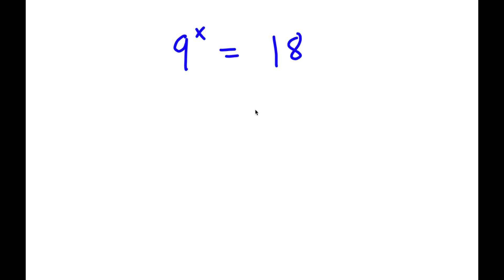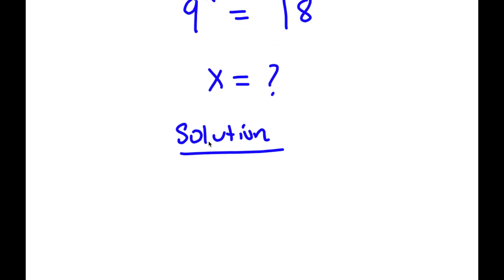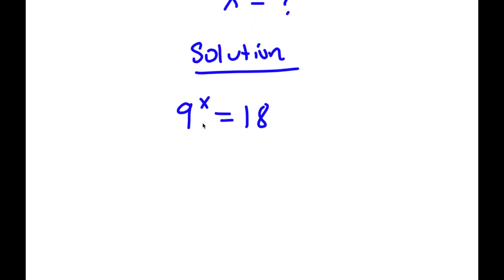In this problem, I have 9 to the power of x is equal to 18, and I want to find the value of x. For my solution, I first start with 9 to the power of x is equal to 18. To solve this, I'm going to take the log on both sides.